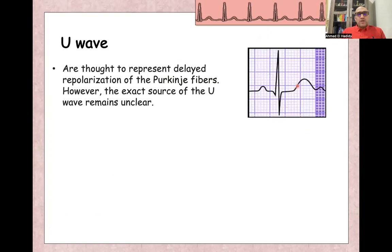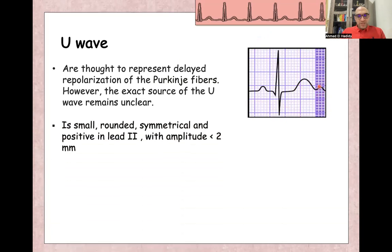U wave represents delayed repolarization of Purkinje fibers, but actual cause of the U wave and why in some patients we can see U wave and others we cannot see, it's not unclear till now. And there is many theories for the U wave. It's a small rounded symmetrical wave.